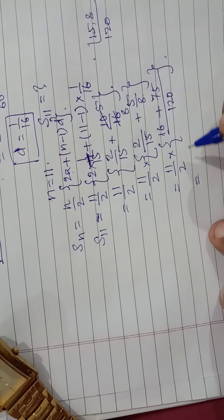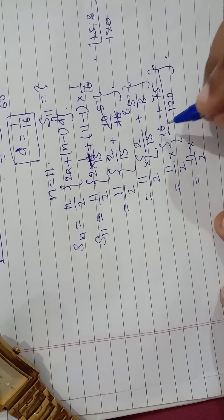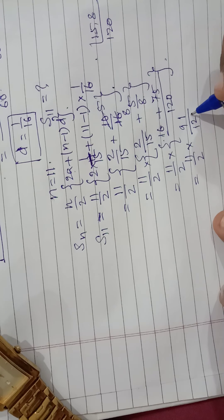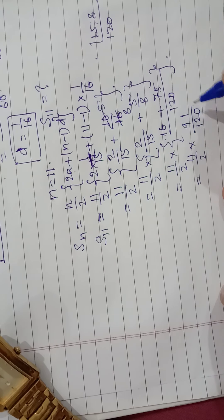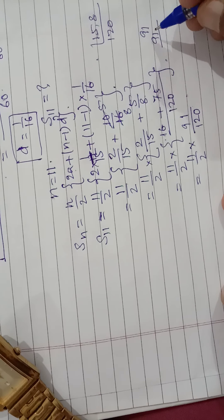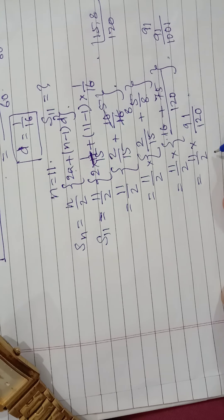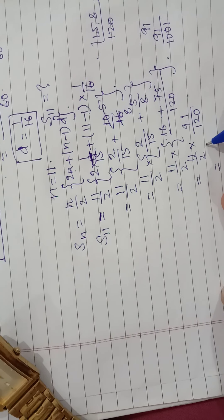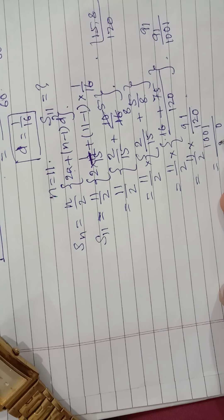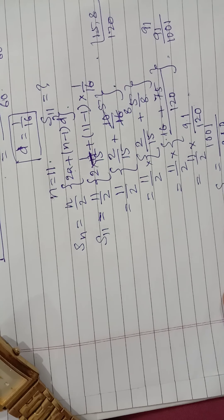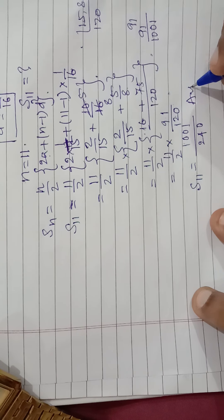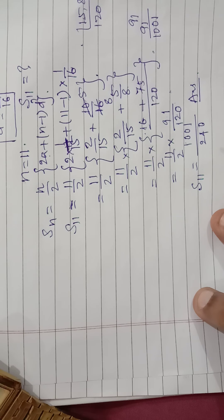Continuing the calculation: 11 by 2 into 9 by 30, which simplifies to 11 by 2 into 3 by 10. Then 11 by 2 into 3 by 10 gives 11 into 91 divided by 240. 11 into 91 is 1001. So S11 is equal to 1001 by 240. That is the answer to the fourth sub-question.